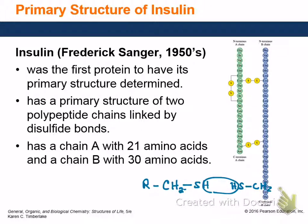What Sanger did is he initially kept the disulfide bridges together so he could tell where they were. The other thing he did is what's called a partial hydrolysis of the structure. Amino acids are connected by a peptide bond - an amide bond. You can break that: amides can be broken by heating them with acid. You put it in an acidic solution, heat it, and you get hydrolysis. You end up with the carboxylic acid end and the ammonium salt end.